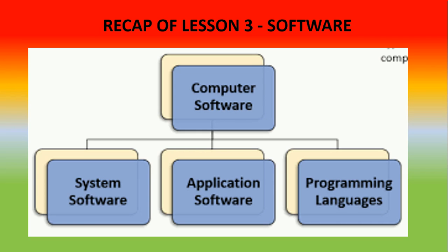The second type of software we studied was application software — programs which are purposely made for some problem. Like if you want to write a letter or document, we need Microsoft Word. For games, there are different types of games that are also application software. To make a painting, you need Microsoft Paint. Then there is programming language, which is also a type of software in which different software are made — all software are made in some or the other programming language.